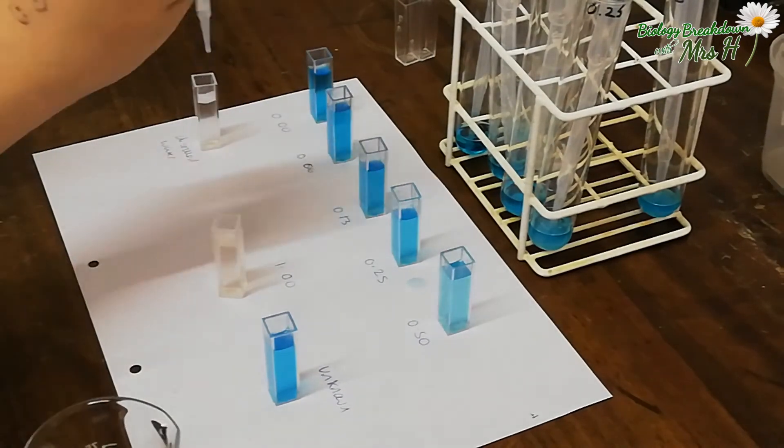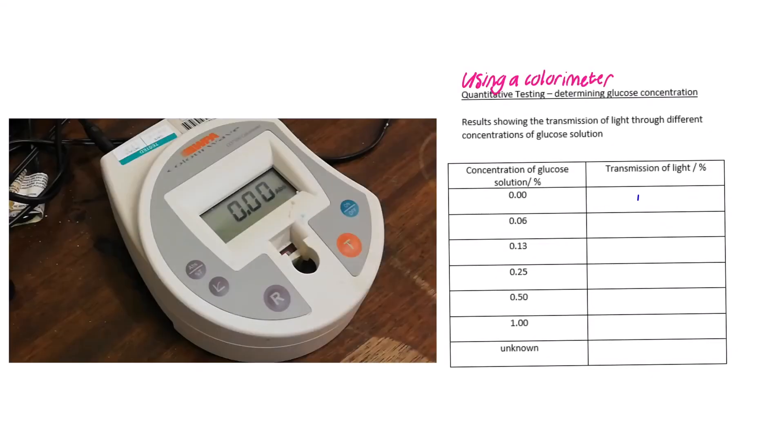This is a colorimeter. It can either be used to measure how much light is absorbed by the solution in the cuvette or how much light can pass through. We are going to measure the percentage of transmission of light through the solution. We need to put the distilled water in first and be sure to place the clear sides of the cuvette so that the light is passing through the clear sides and not the translucent sides. Then we press R to set the colorimeter to 100% transmission of light.